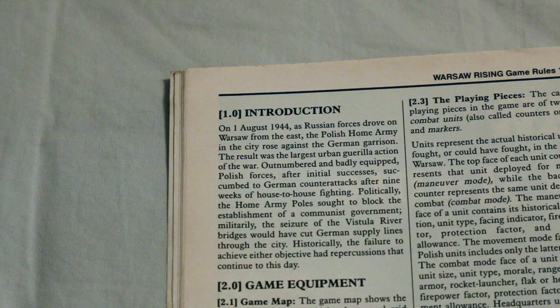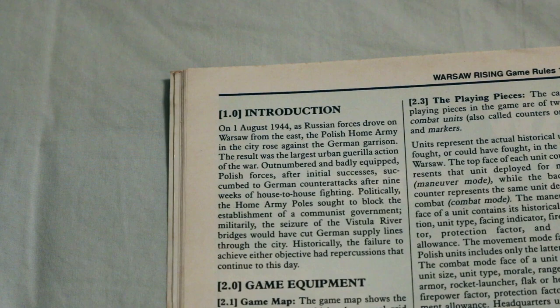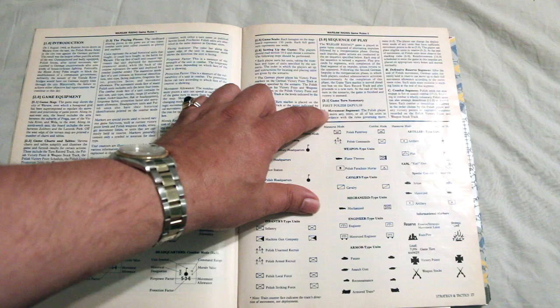Politically, the home army Poles sought to block the establishment of a communist government. Militarily, the seizure of the Vistula River bridges would have cut German supply lines through the city. Historically, the failure to achieve either objective had repercussions that continued to this day.